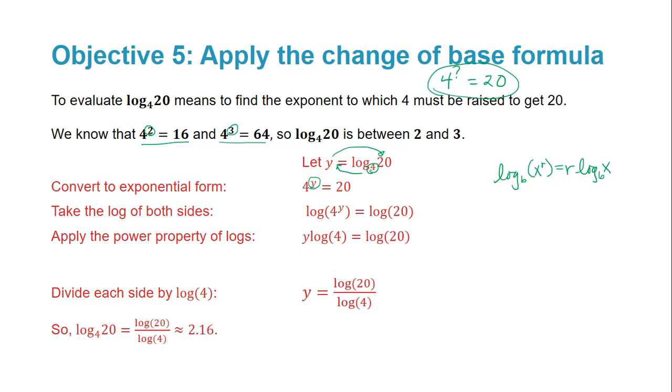And then to solve for y, we can divide each side by the log of 4. And therefore we get y is equal to log of 20 divided by log of 4. And if we use our calculator to approximate that value, we will see that it is about 2.16. And we knew it had to be between 2 and 3, closer to the 2 since 20 is closer to 16 than it is to 64.